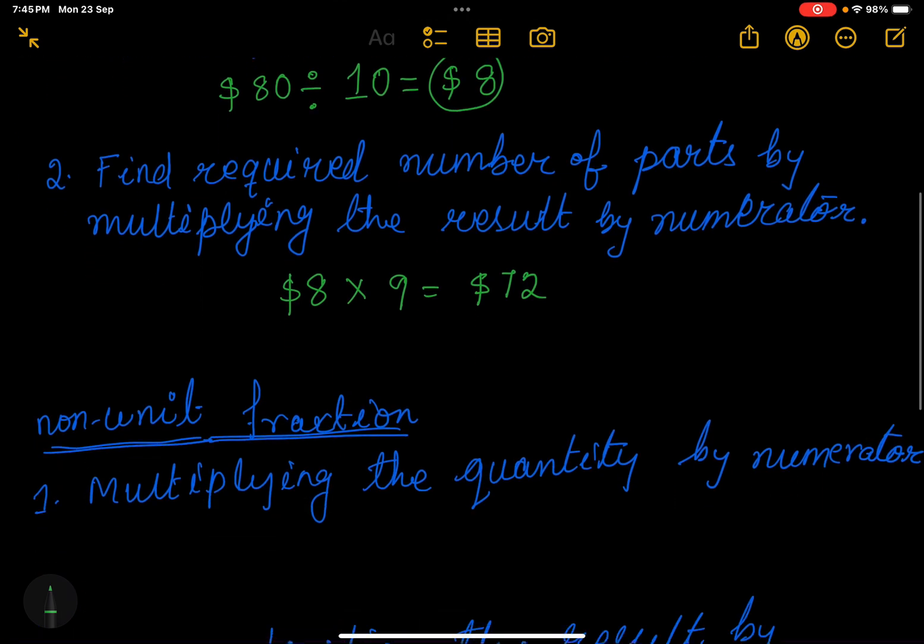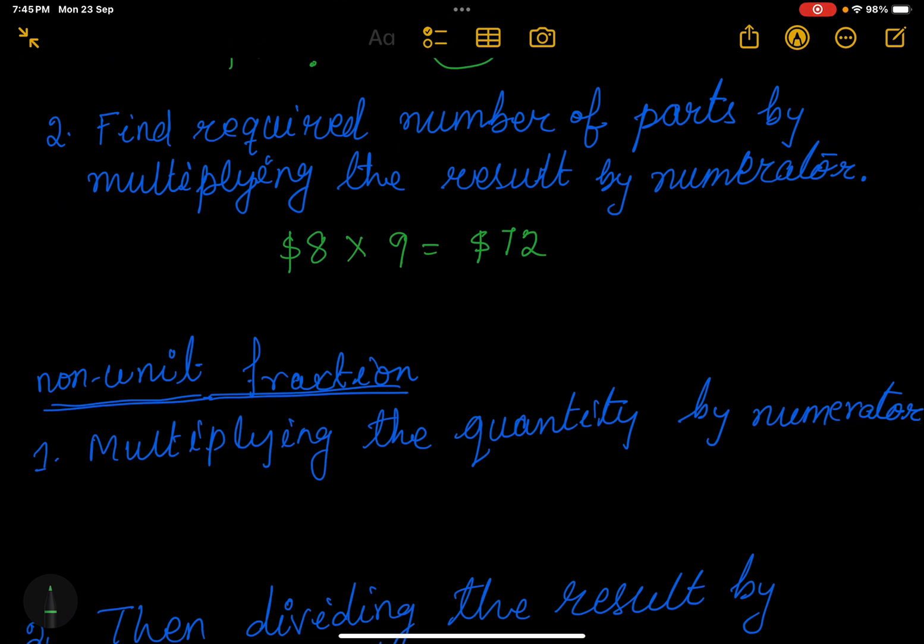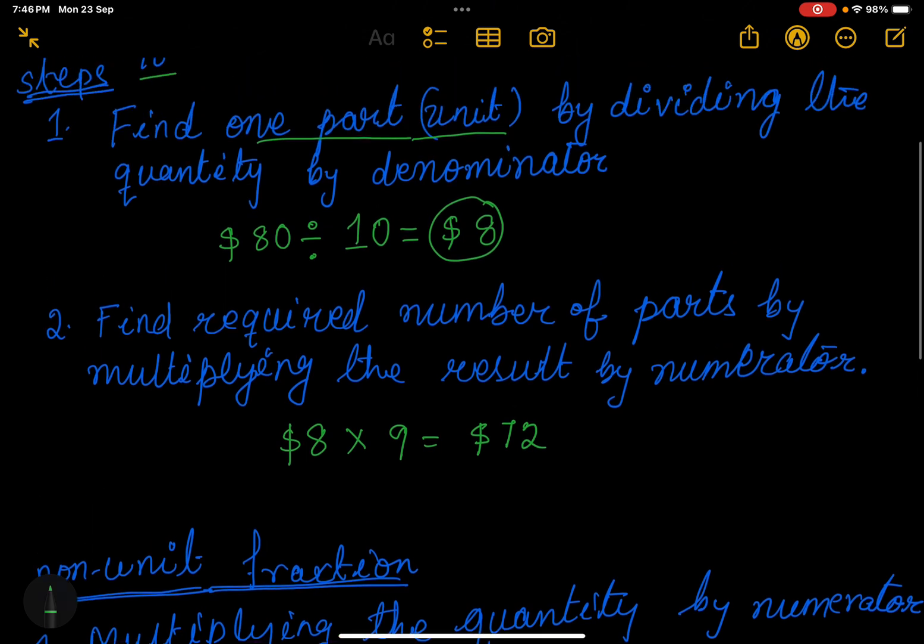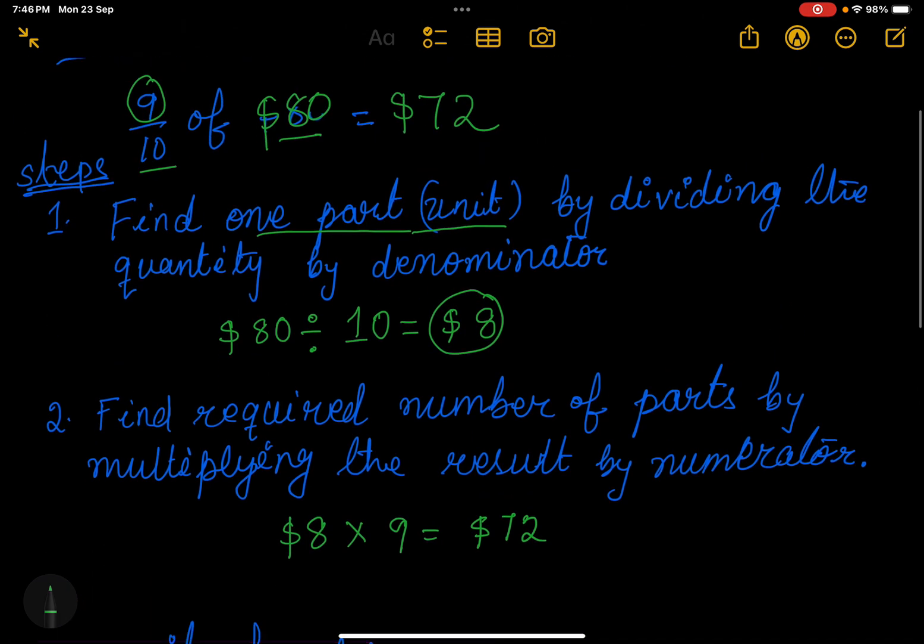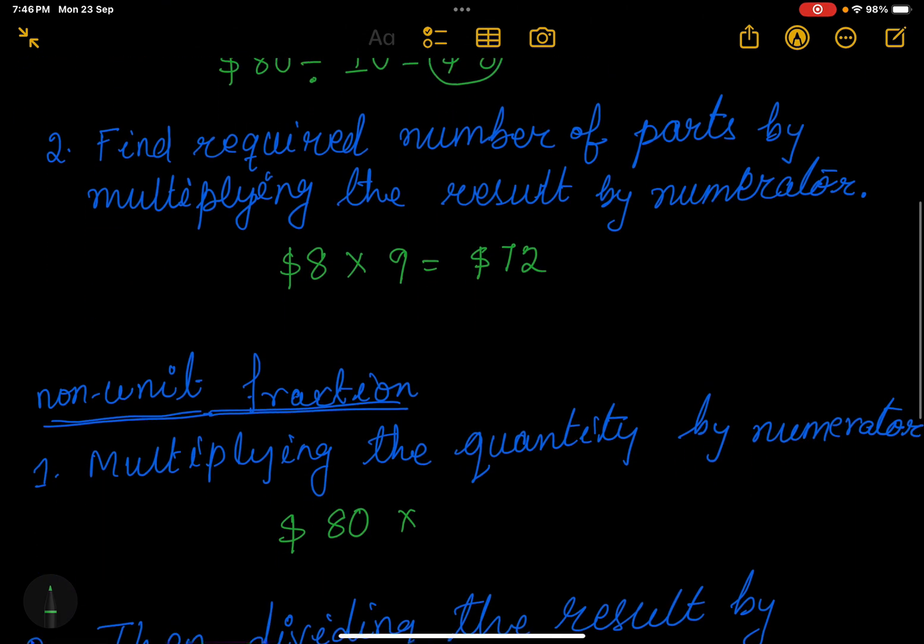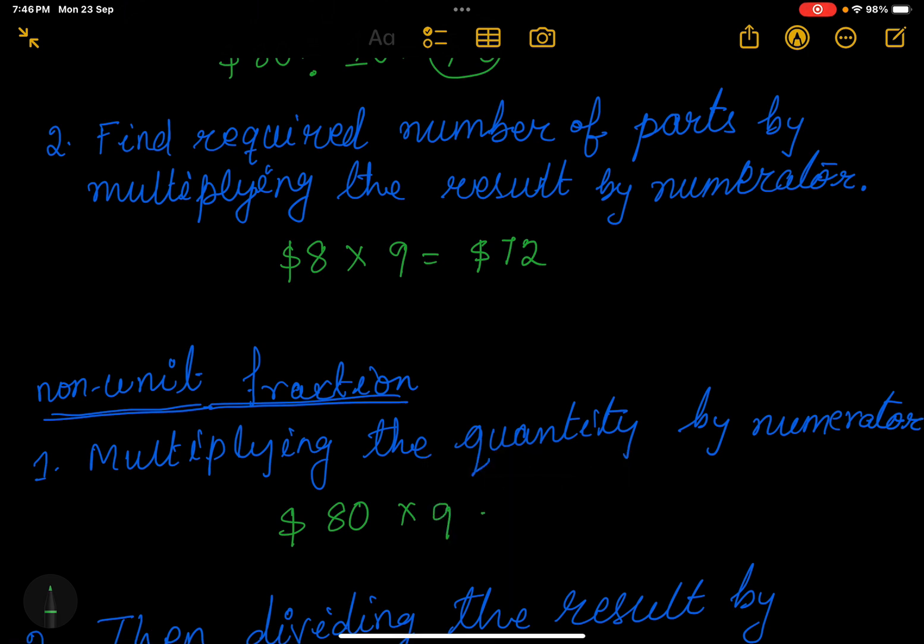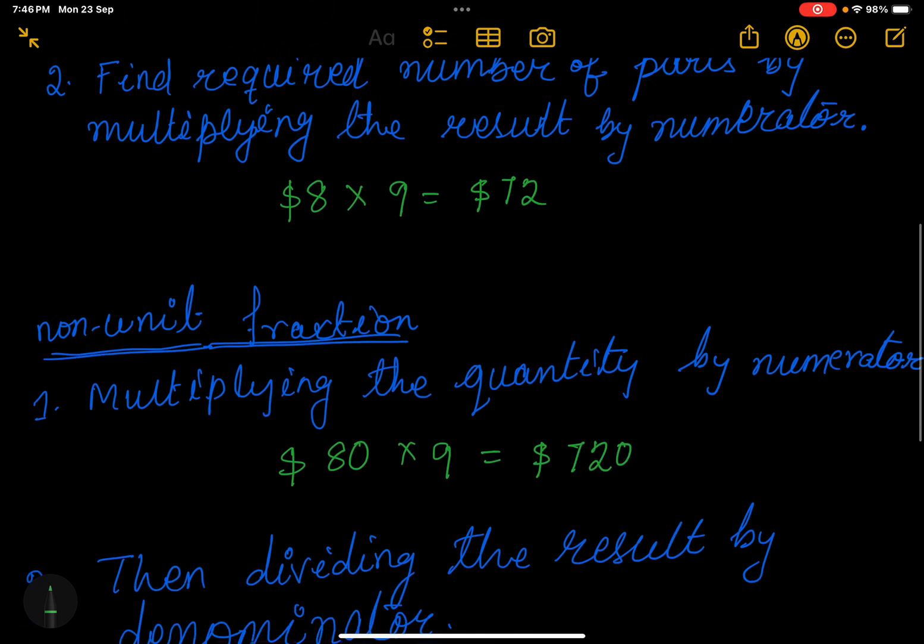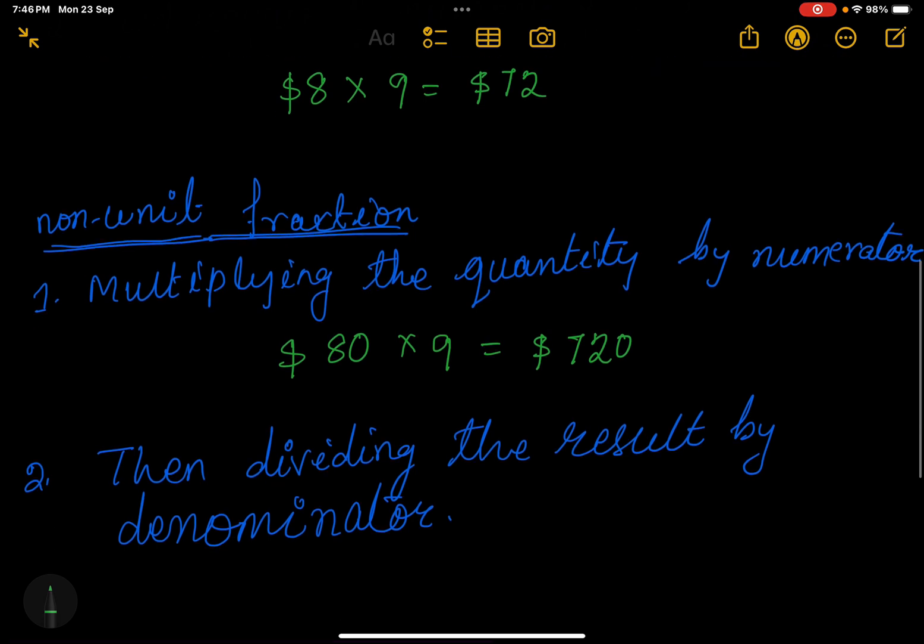non-unit fraction. In this step, multiply the quantity by the numerator. The quantity is $80 times the numerator, which is 9. So multiply by 9, and my answer is $720. Now, then divide the result. The result is now $720, then